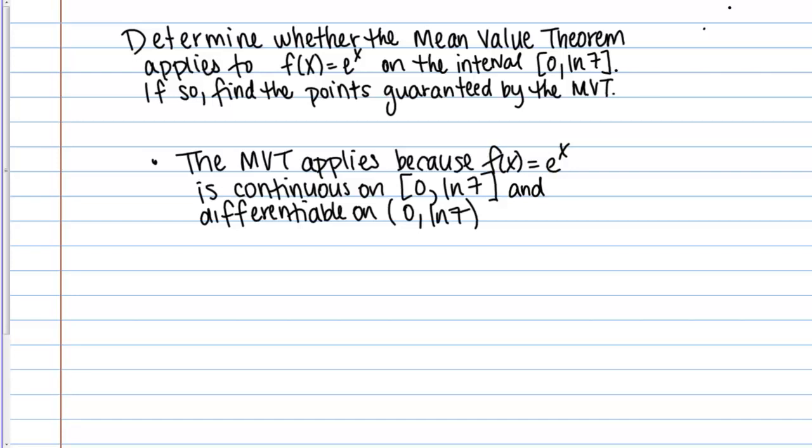The second part of the question then is to find the point or points guaranteed by the mean value theorem. Because of this first bullet point I've written down, because the mean value theorem does apply, these criteria are met. Then I know, thus there is a C such that F prime of C equals F of B minus F of A over B minus A.